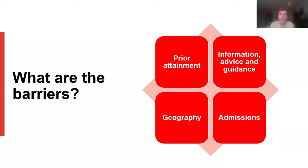Information, advice and guidance is another big barrier for young people, particularly for students who've got no history of higher education in their families or within their communities. Geography plays a big role in some of the barriers students face — there are quite a lot of cold spots around the UK and certainly outside of London. And admissions can also pose a barrier to some students, such as the entrance requirements and the different patterns of application that young people face.